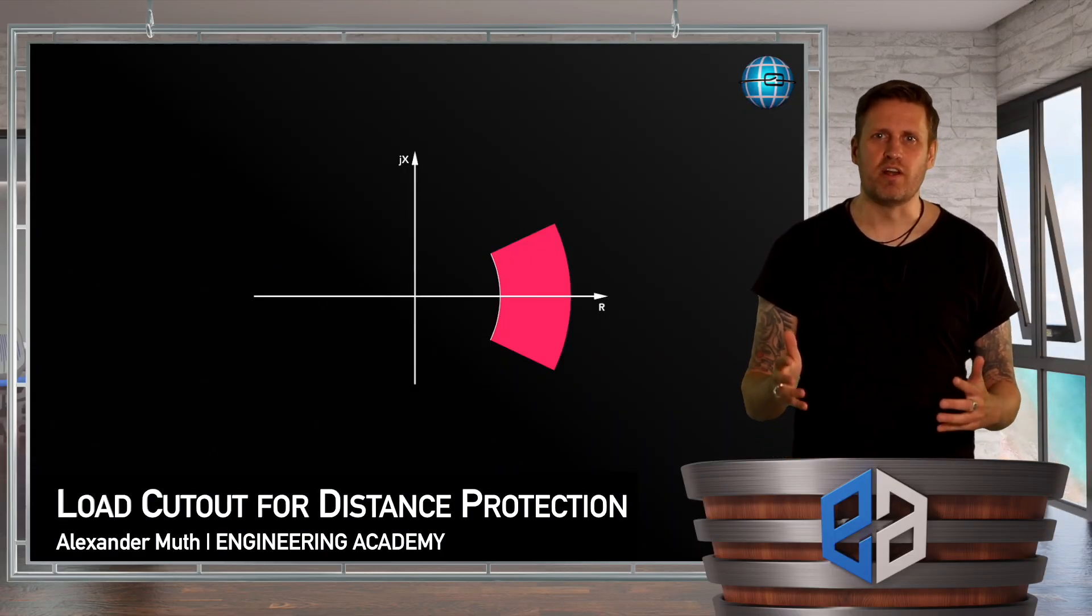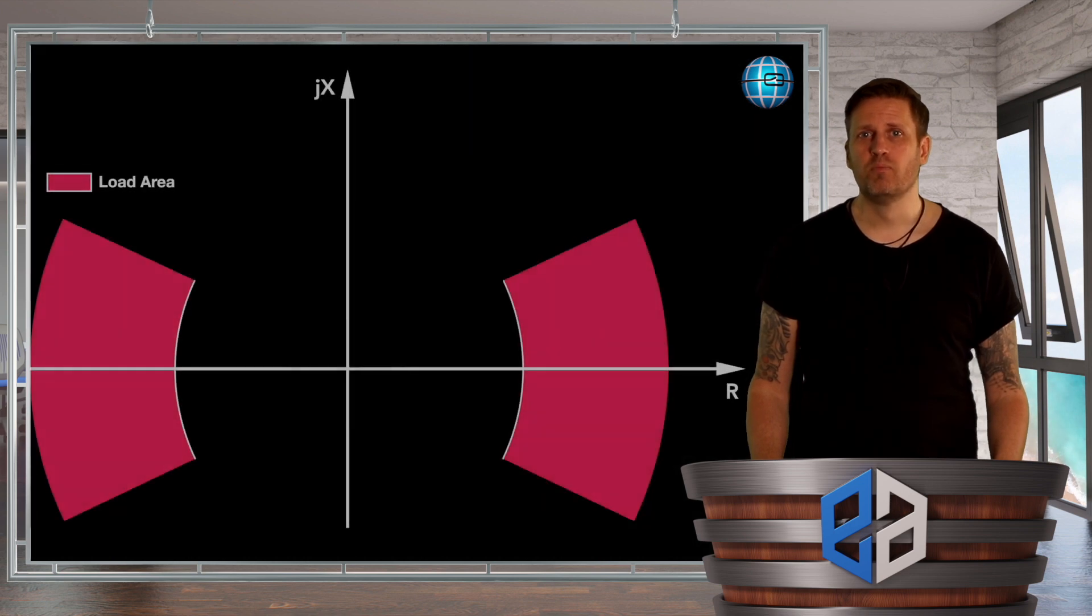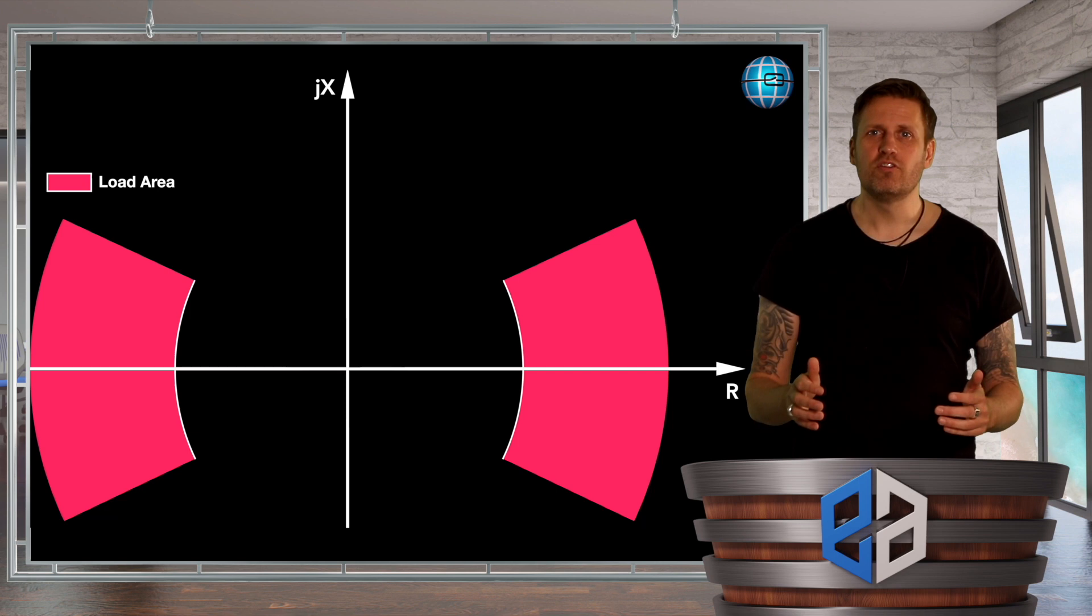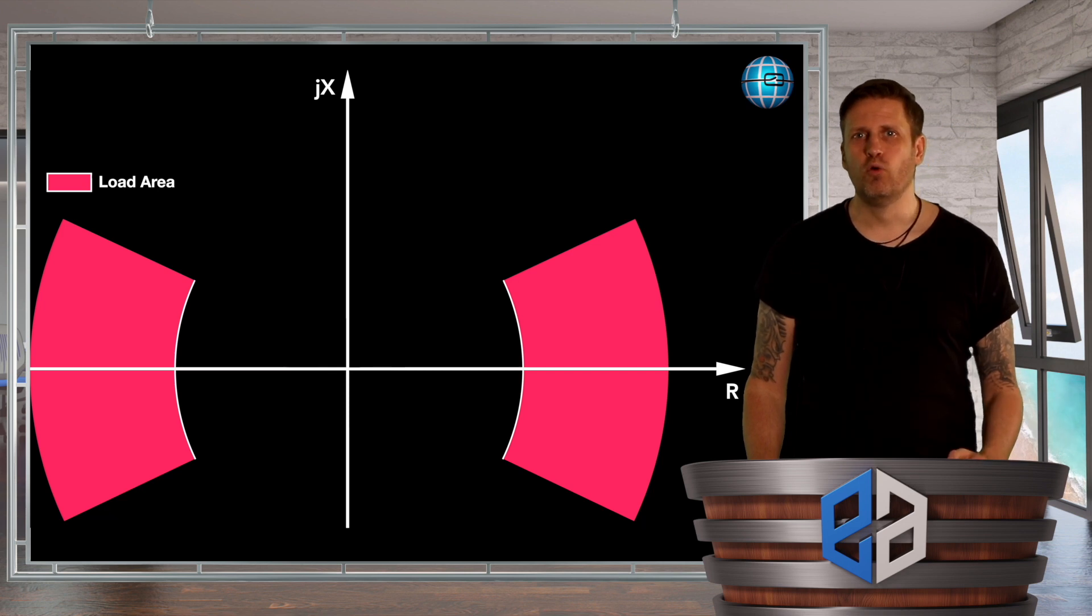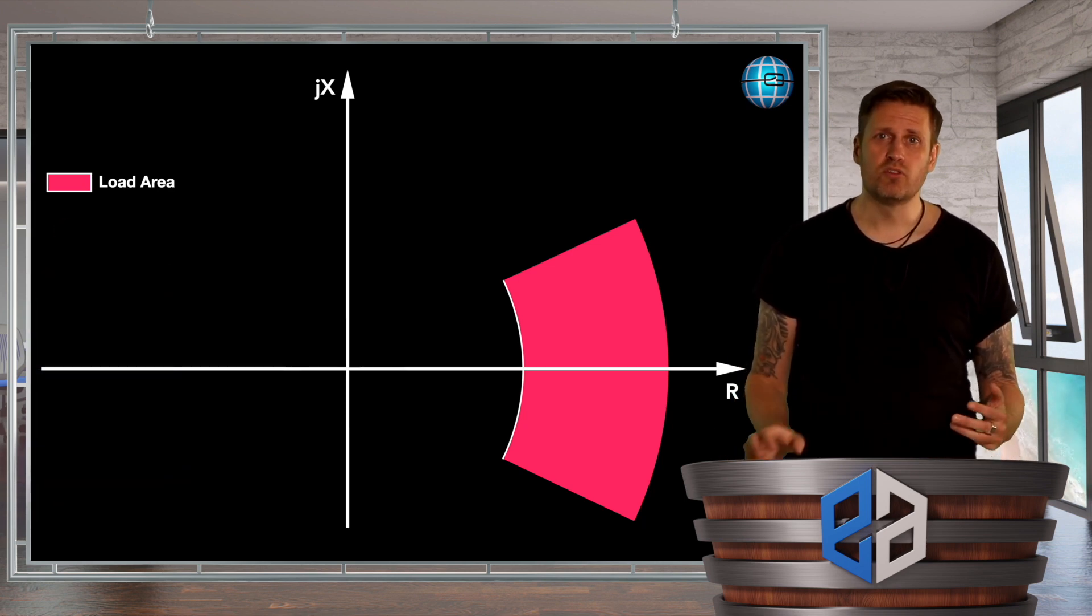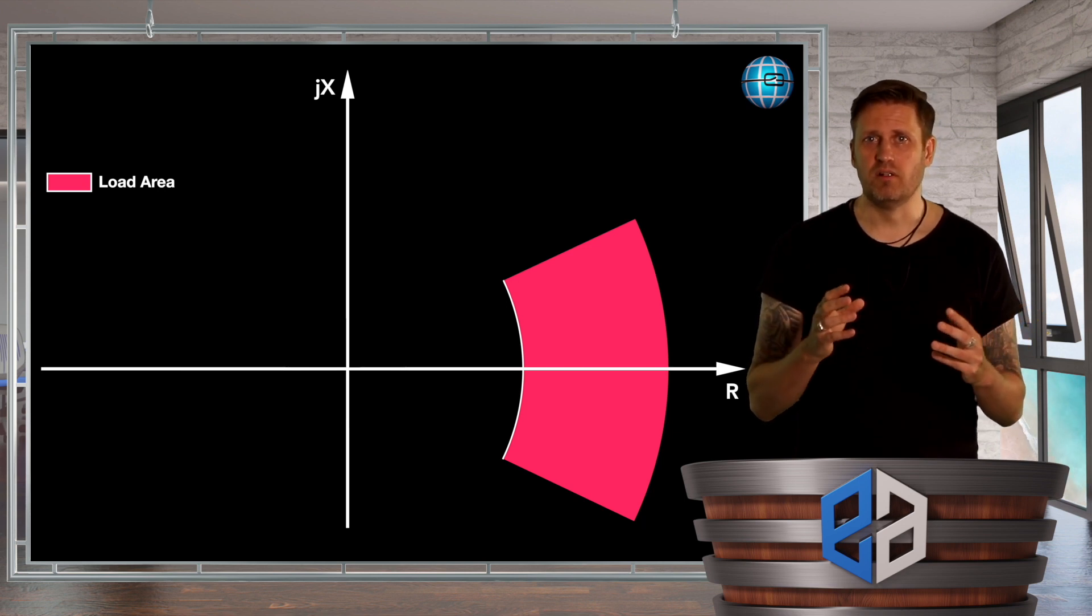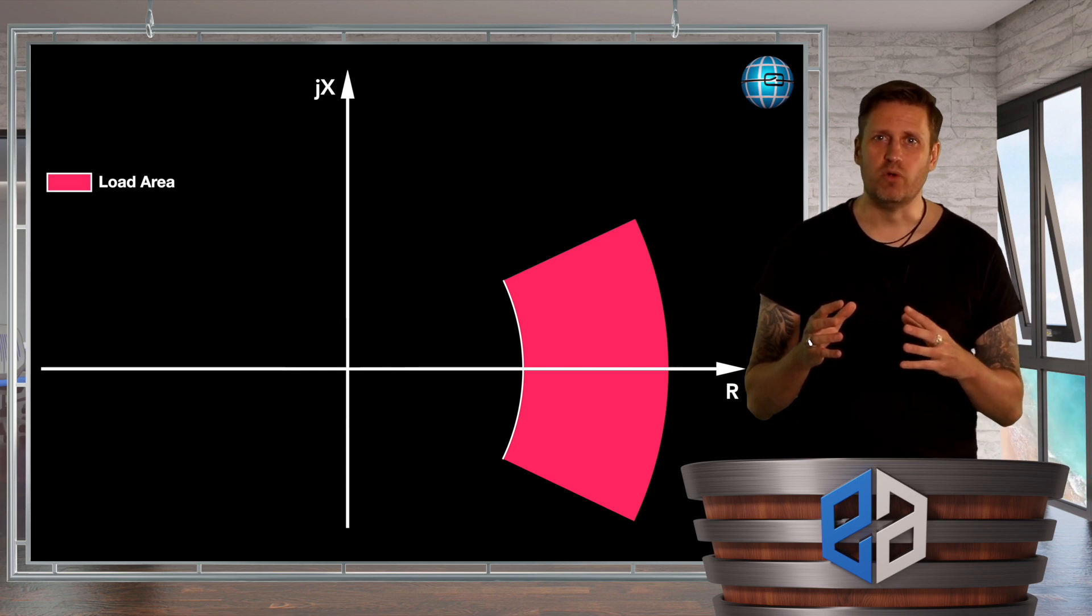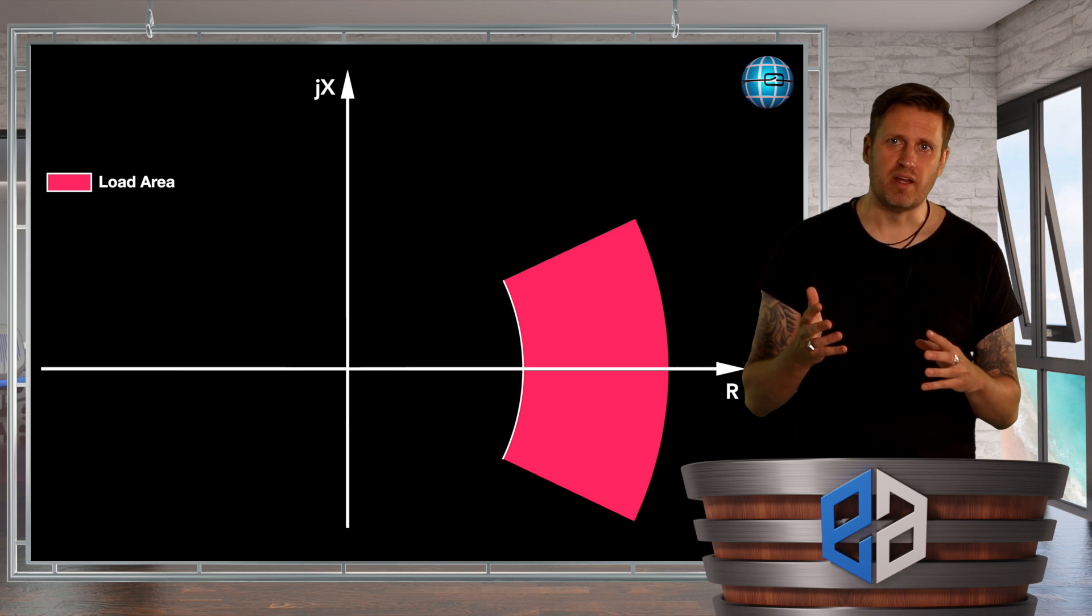As always let's start with the question why. Why is there a load cutout in distance protection? The figure shows the typical load scenario in a meshed network in Rx diagram. In the first and fourth quadrant on our right side in the picture we see the load in the forward direction, and in the second and third quadrant we see the load of the backward direction. To keep it simple in the following we only focus on the forward direction and ignore the load in backward direction.